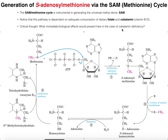What immediate biological effects would present in the case of cobalamin deficiency? Beyond the failure to synthesize methionine and SAM, you won't be able to run methionine synthase to its maximum extent, meaning homocysteine will not be converted to methionine very efficiently. So methionine would go down, but homocysteine levels would actually go up. Elevated homocysteine levels are correlated with all kinds of cardiovascular diseases, which is one reason you want to make sure you're getting adequate folate and cobalamin — both of which are B vitamins.